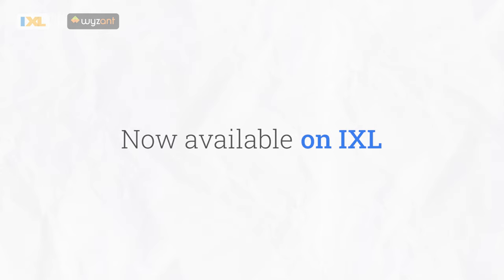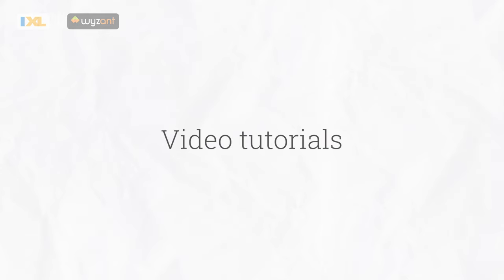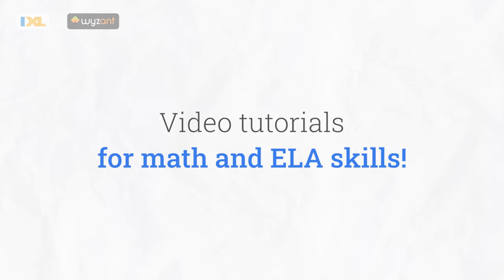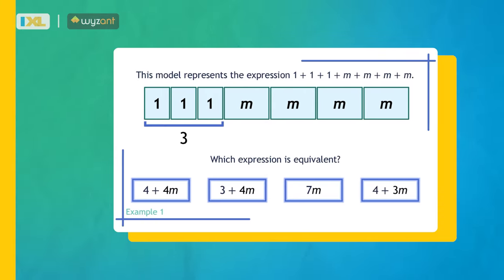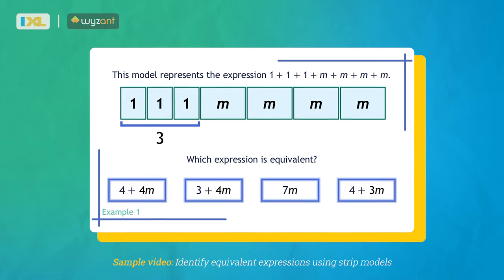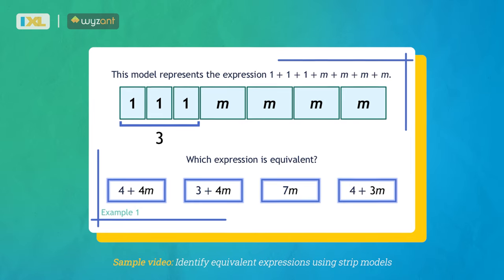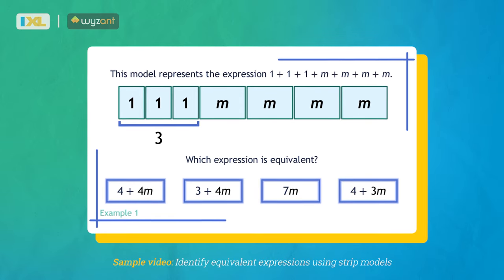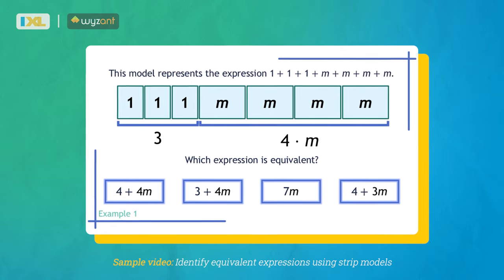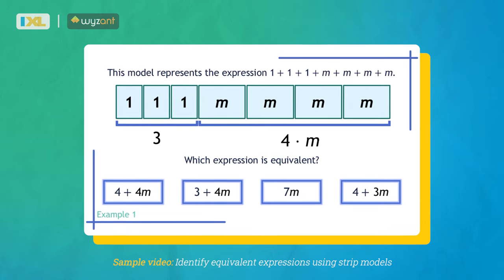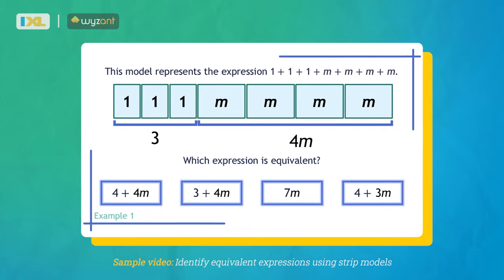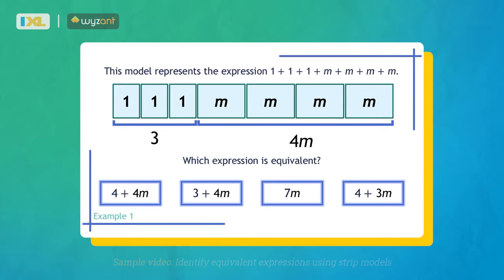What we need is a number detective. There are also 4 M's in the model. This is the same as 4 times M, which can also be written as 4M.